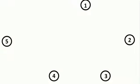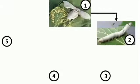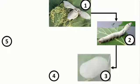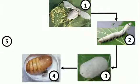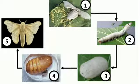So children, there are 5 stages in the life cycle of the silk moth. The first stage is when the silk moth lays the eggs. The second stage is the caterpillar. The third stage is when it makes a cocoon. The fourth stage is when the caterpillar turns into a pupa inside the cocoon. And the fifth stage is when the pupa turns into an adult moth and comes out of the cocoon.